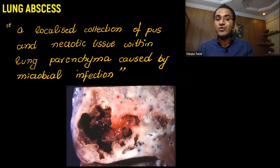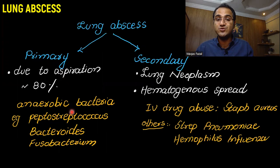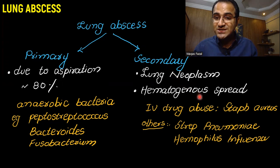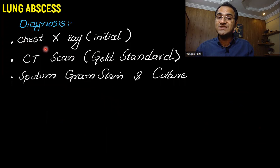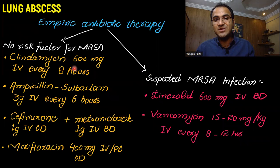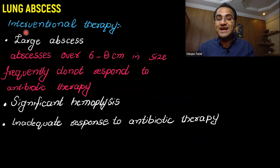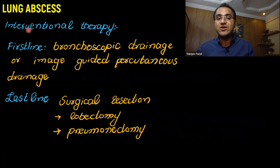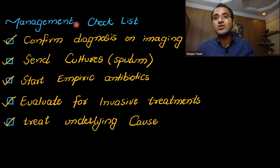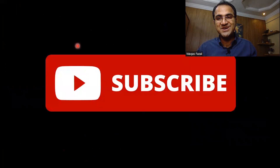In summary, we talked about what is lung abscess, primary lung abscess due to aspiration mostly by anaerobic bacteria, secondary lung abscess due to lung neoplasm and hematogenous spread, clinical features, diagnosis via chest X-ray and CT scan, management — admit the patient, obtain cultures, start empiric antibiotic therapy based on MRSA risk factors, and interventional therapy for large abscesses or significant hemoptysis, including bronchoscopic drainage and surgical resection. If you liked this video, please subscribe and check out my other videos on emergency medicine and infectious medicine.